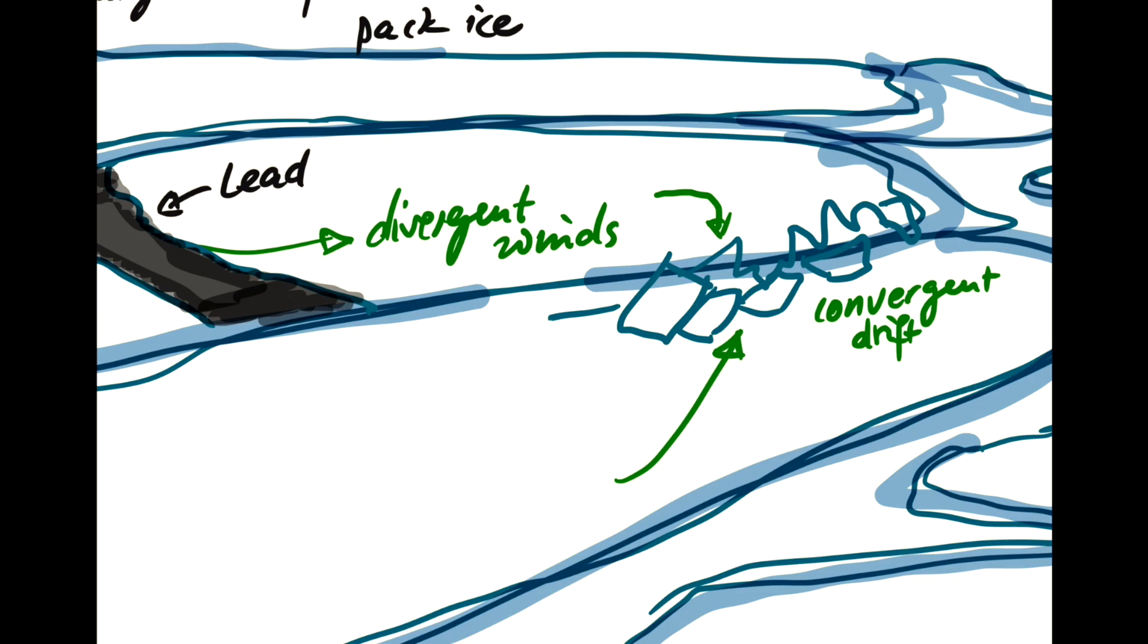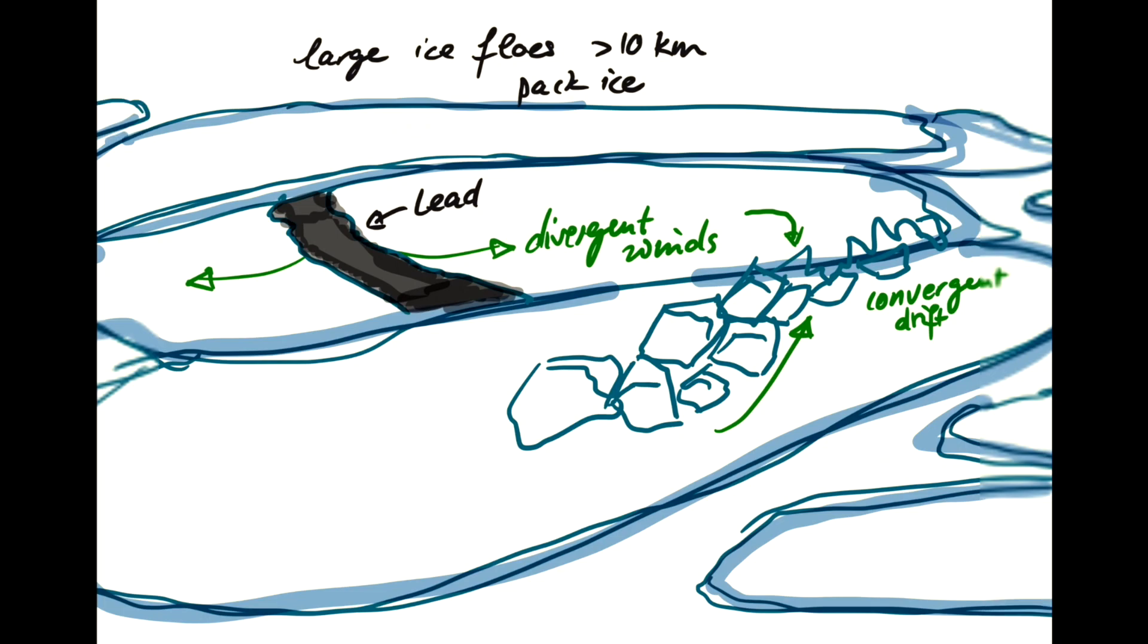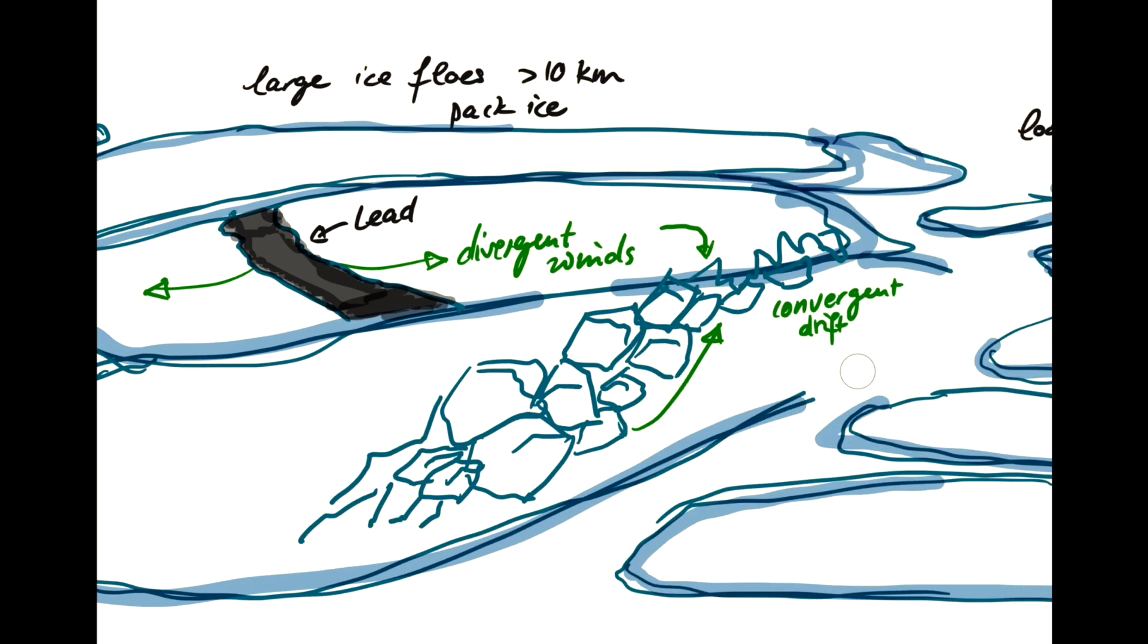The blocks by the convergent conditions get piled on top of each other. And depending on the shape of the original sea ice flows, these blocks are often arranged in sort of sinuous snake-like patterns.